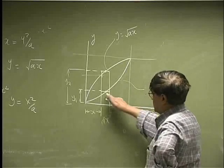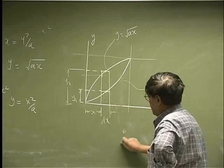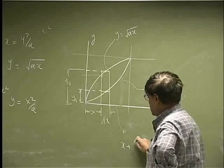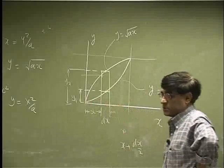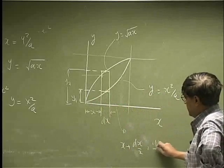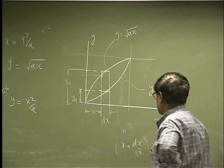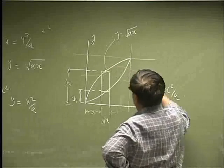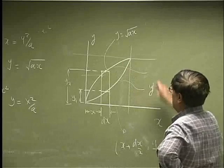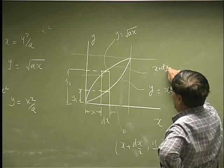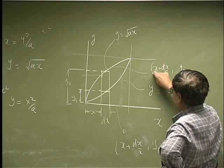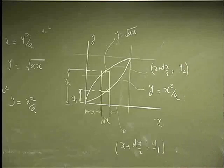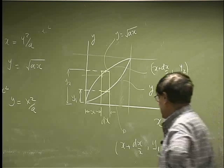In other words, the bottom point of the rectangle is going to be at (x + dx/2, y1) — that is, x and half of the dx distance, and y1. The top point, which is the top of that rectangle, is going to be at (x + dx/2, y2). That's the way we chose the rectangle we are working with.